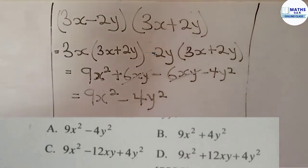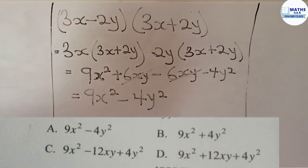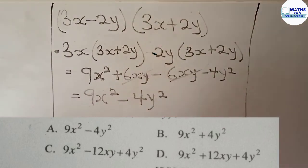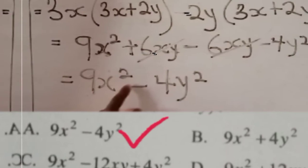So which of the options do you think is correct? The option is A: 9x squared minus 4y squared.